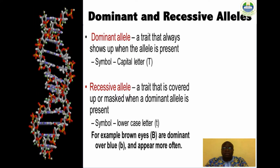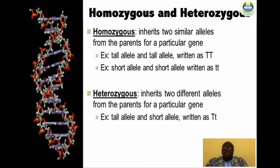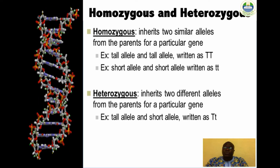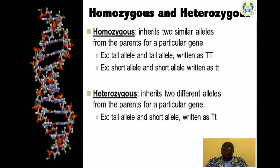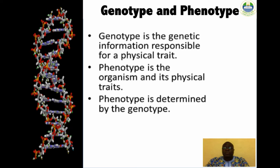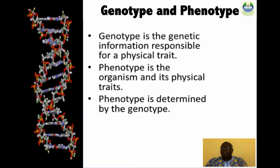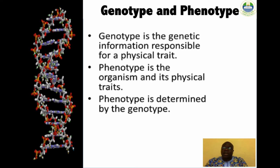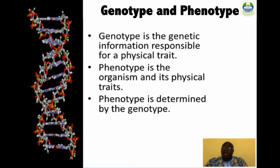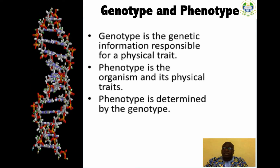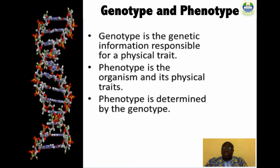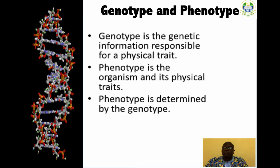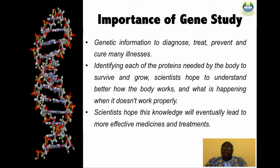A homozygous trait is made up of two of the same allele, while a heterozygous trait is made up of two different alleles. A genotype is an individual's collection of genes; the term can also refer to the two alleles inherited for a particular gene. The genotype is expressed when information encoded in the gene's DNA is used to make proteins and RNA molecules. The expression of the genotype contributes to the individual's observable traits, which is called the phenotype.